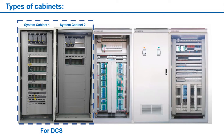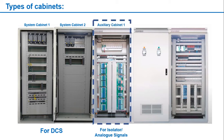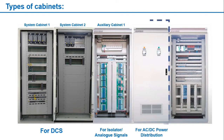The system cabinet is called so because it contains controllers, I/O modules, network modules, and power supplies required for these modules. The next panel contains isolators for the protection of analog signals from field signals — we name this panel the auxiliary cabinet one. All panels other than the system cabinet in which field signal termination is done are called auxiliary or marshalling cabinets.